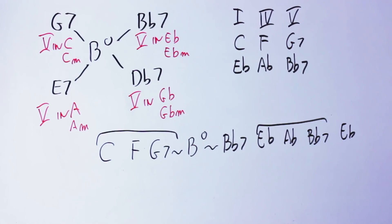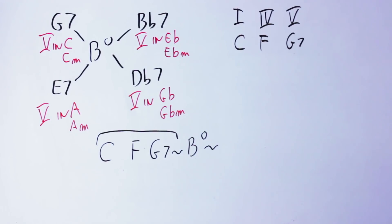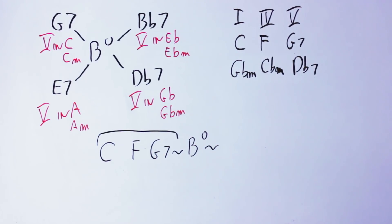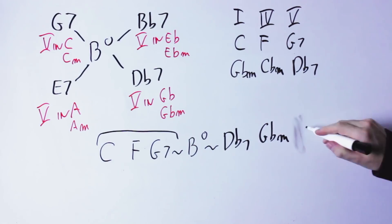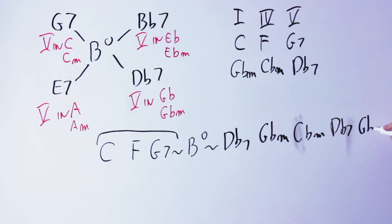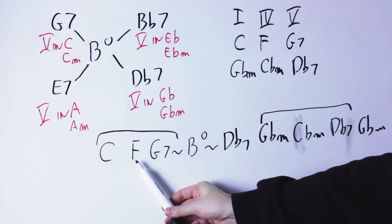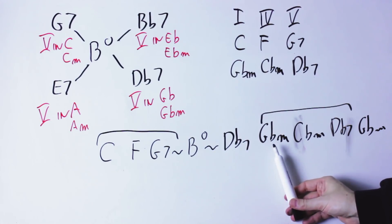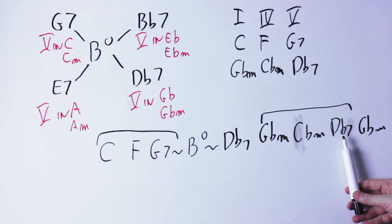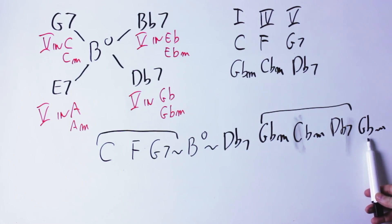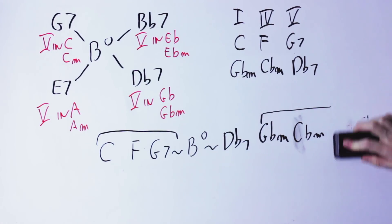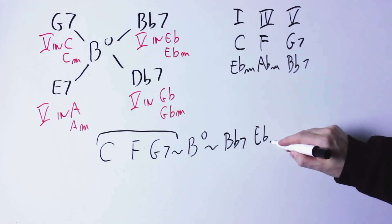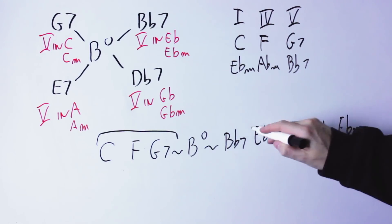So I can move from the key of C into the key of G flat minor using the exact same trick. For instance: C, F, G7, then B diminished, then D flat 7, G flat minor, and then stay in the key of G flat minor by playing C flat minor, D flat 7, G flat minor. Again, a very smooth change. I can also do the same with the key of E flat minor: C, F, G7, then B diminished, then B flat 7, then E flat minor, A flat minor, B flat 7, E flat minor.